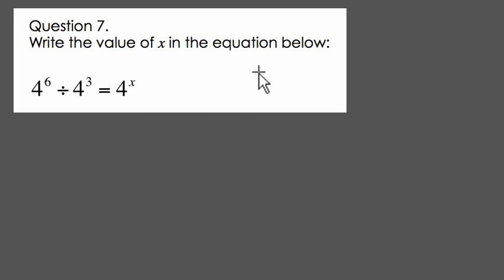Here they want us to write the value of x in the equation below. And notice that we're dividing 4 to the 6th, a bigger power, divided by a smaller power, 4 to the 3rd. And that equals 4 to some exponent here, and we're trying to find that exponent.